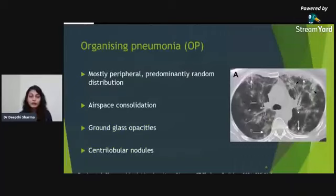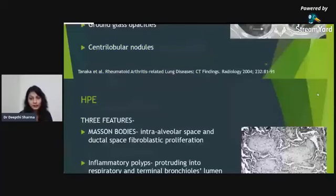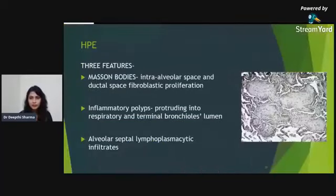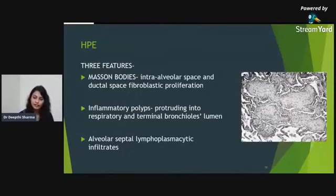Organizing pneumonia on HRCT shows airspace consolidation — mostly peripheral and random distribution — with ground glass opacities and centrilobular nodules. Histopathologically, three features are seen: Masson bodies (intra-alveolar and ductal fibroblastic proliferation), inflammatory polyps protruding into the lumen, and alveolar septal infiltration.